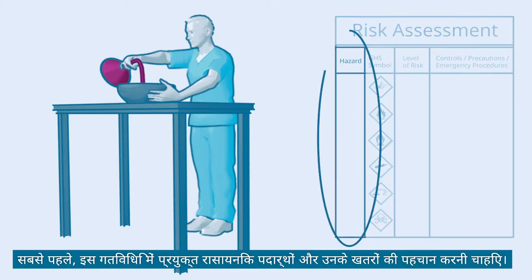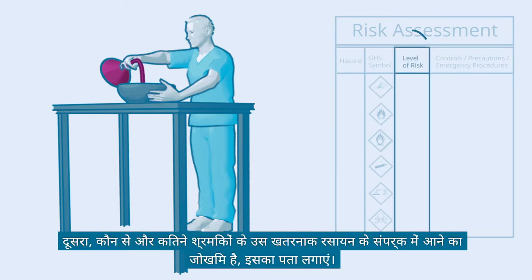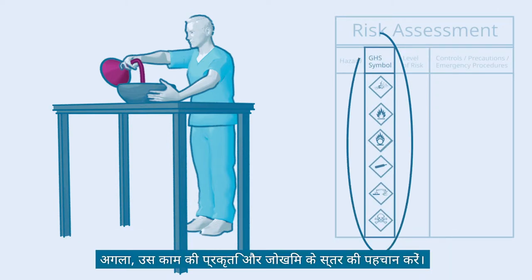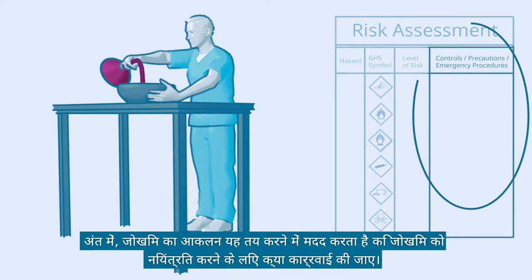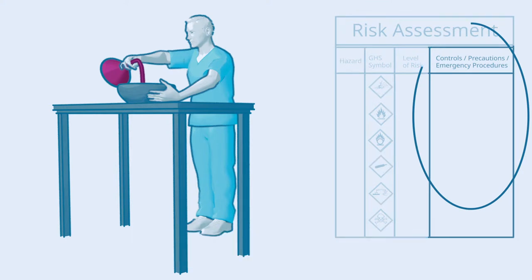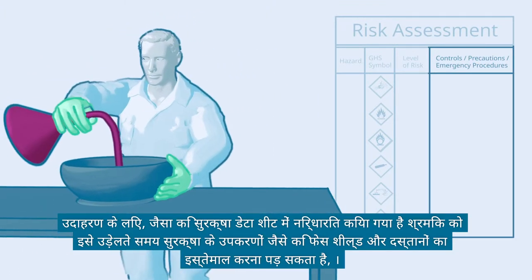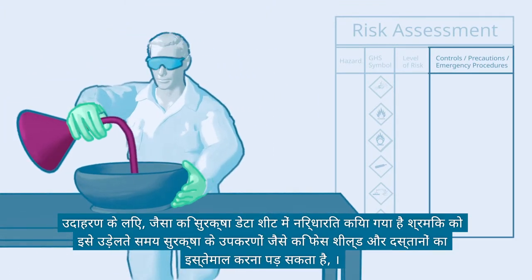First, identify the chemical substances used in this activity and their hazards. Second, locate which and how many workers are possibly at risk of exposure to that hazardous chemical. Next, identify the nature and level of risk of that activity. In this case, there is a high risk of splashing, which may cause skin or eye burns. Finally, the risk assessment helps to decide what actions to take for controlling the risk. For example, the worker may have to use protective equipment such as a face shield and gloves while pouring, as prescribed in the safety data sheet. If feasible, the best option to control the risk is to avoid using such hazardous substances.